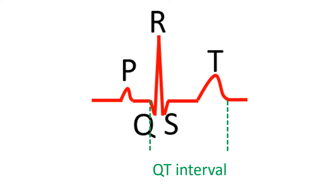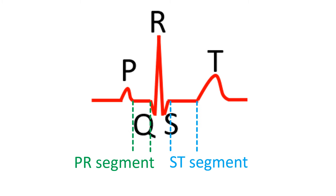Both abnormally prolonged and abnormally short QT intervals can predispose to serious abnormalities of heart rhythm. The PR segment — the region between the P wave and the QRS — is usually at the same level as the baseline. The region between the T wave and the next P wave is taken as the baseline. The ST segment, though supposed to be at the level of the baseline, is usually slightly upsloping and gradually merges with the beginning of the T wave.